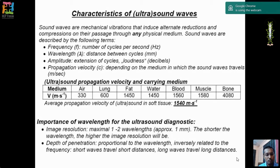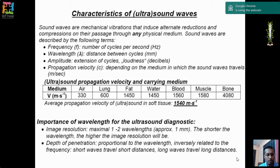Wavelength is important for diagnostic resolution — shorter wavelength gives higher image resolution. Depth of penetration is proportional to wavelength and inversely related to frequency. Short waves travel shorter distances; long waves travel longer distances. For better depth of penetration you need low frequency and higher wavelength waves. When placing a transthoracic probe over the thorax, we are trying to visualize the heart, lungs, and pleural space through the chest wall.